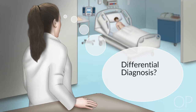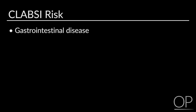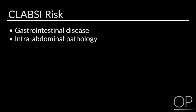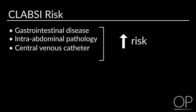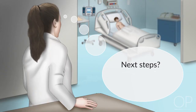What are you worried about? Central line associated bloodstream infection, or CLABSI. Patients with gastrointestinal disease or intra-abdominal pathology and central venous catheters are at an increased risk of CLABSI. Patients receiving parenteral nutrition are also at higher risk for CLABSI when compared to patients with central lines for other indications. What do you do next?